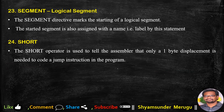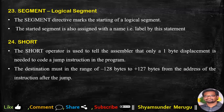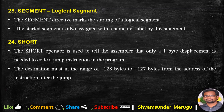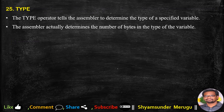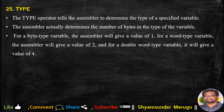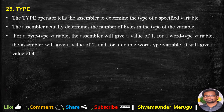SHORT — the SHORT operator tells the assembler that only a 1-byte displacement is needed to code a JUMP instruction. The destination must be in the range of -128 to +127 bytes from the address of the instruction after the jump, e.g., 'JMP SHORT nearby_label'. TYPE — the TYPE operator tells the assembler to determine the type of a specified variable by determining the number of bytes. For a byte-type variable the value is 1, for a word-type variable it is 2, and for a double-word-type variable it is 4.